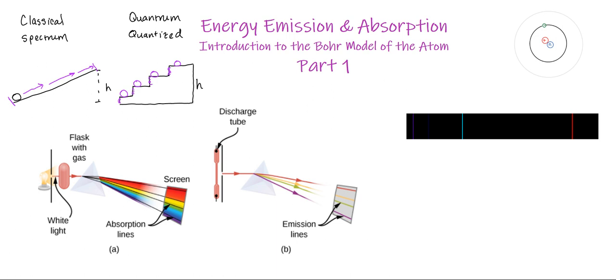Now, in the next few videos, what we're going to be doing is taking a look at what's actually happening here. And that's going to be what Bohr, Niels Bohr, proposed and was published in 1913, which is now known as the Bohr model of the atom. And we'll get into all the details of that in the next few videos.